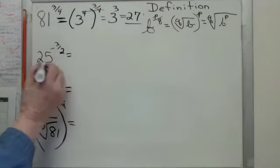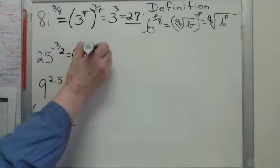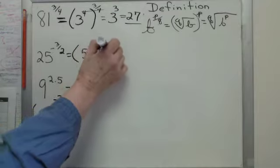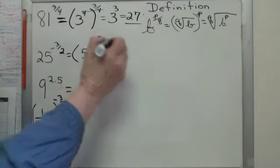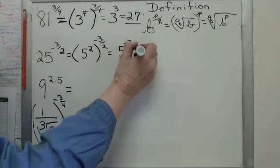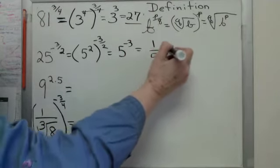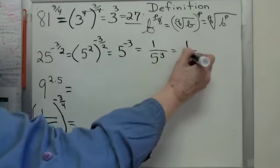Let's do another one. 25, how can I rewrite that? 5 squared, you knew that right, to the negative 3 halves. Power to a power, multiply. 5 to the negative 3 equals 1 over 5 to the 3rd equals 1 over 125.